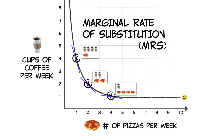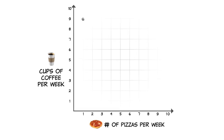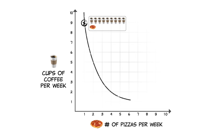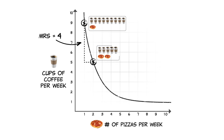For example, suppose you are considering a combination that has very few pizzas and many cups of coffee. The marginal rate of substitution is 4, meaning you are willing to forgo 4 cups of coffee to consume one more pizza.